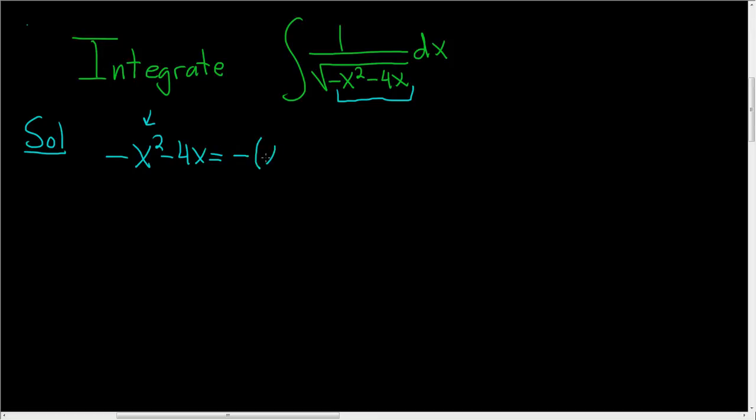So we'll start by factoring out a minus 1. So minus x squared plus 4x. And now we're going to complete the square on this part here. So we still have the minus and the parentheses and then we write this down one more time. So x squared plus 4x.